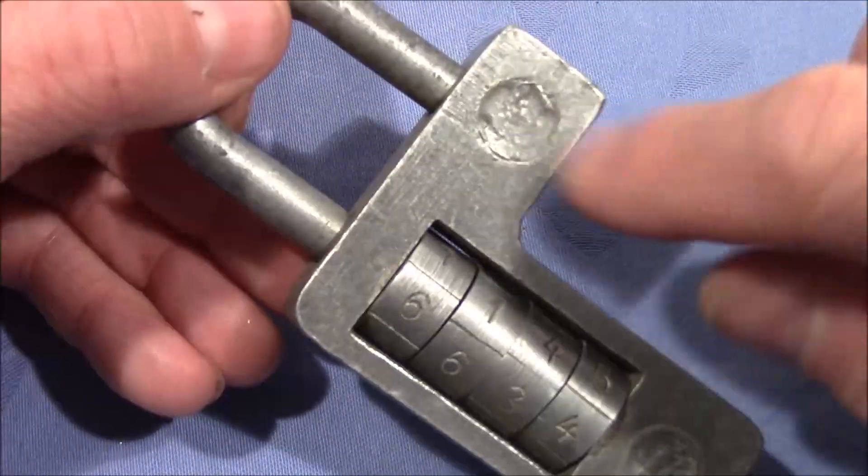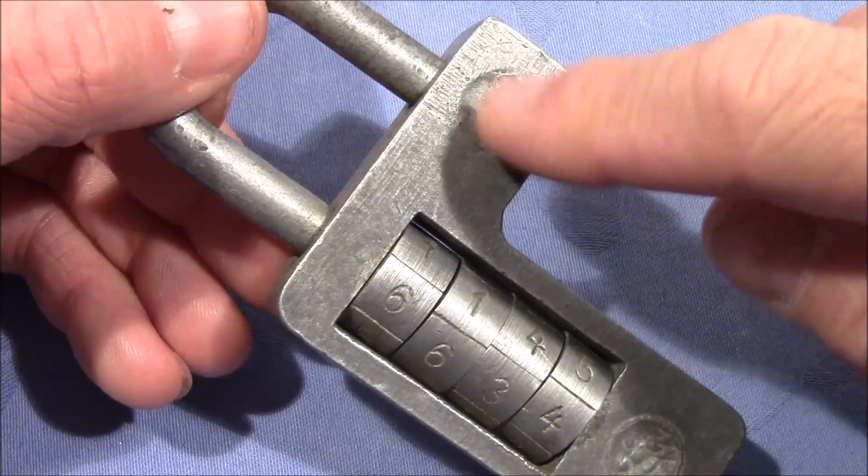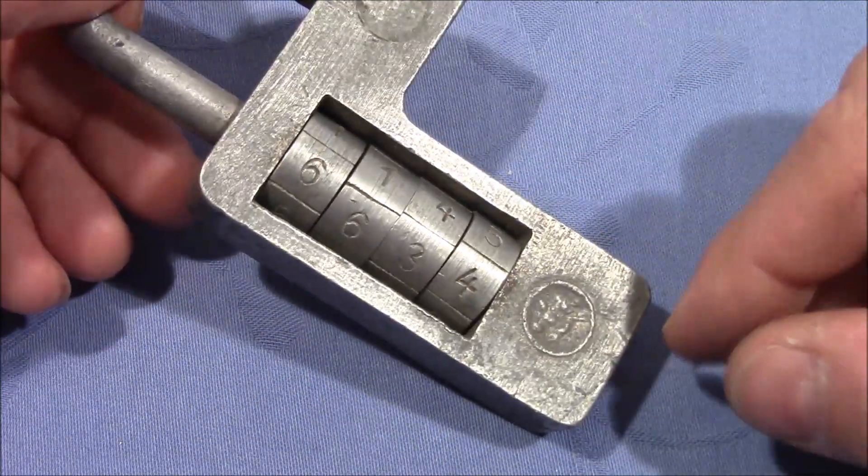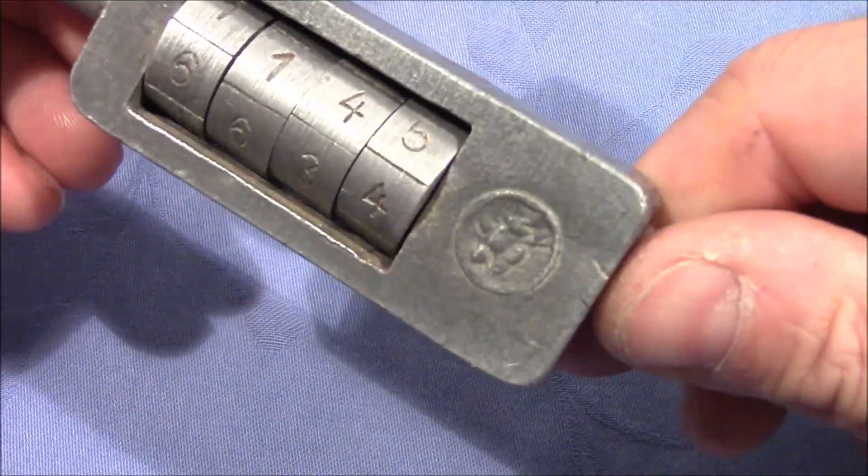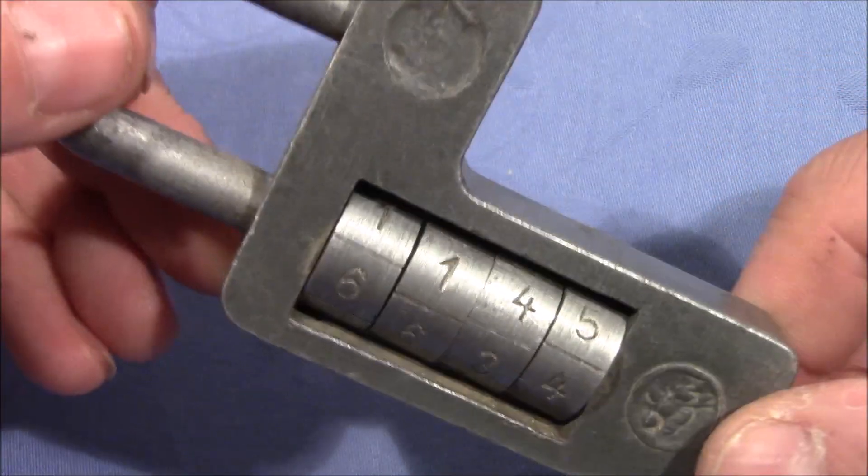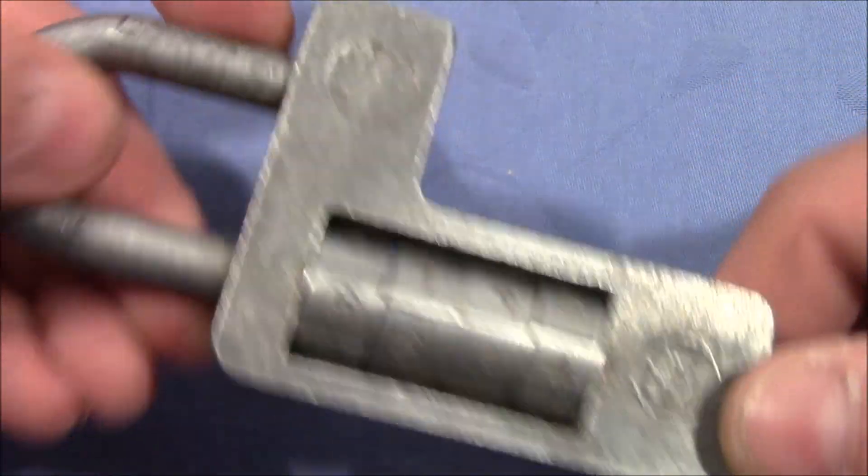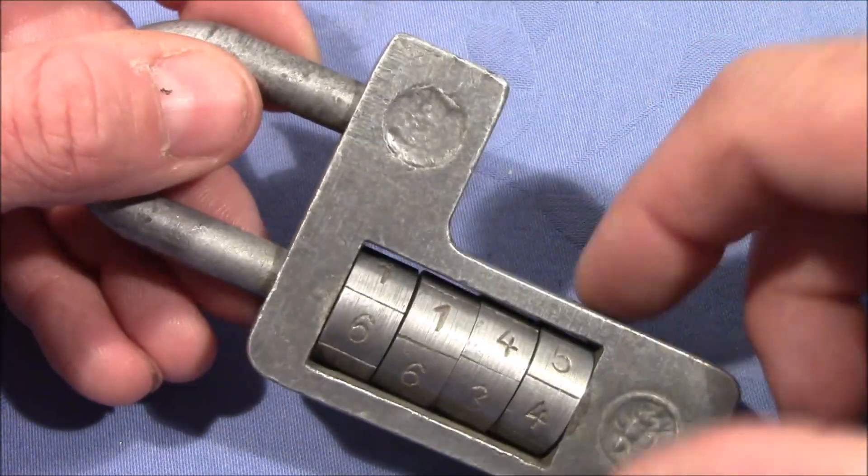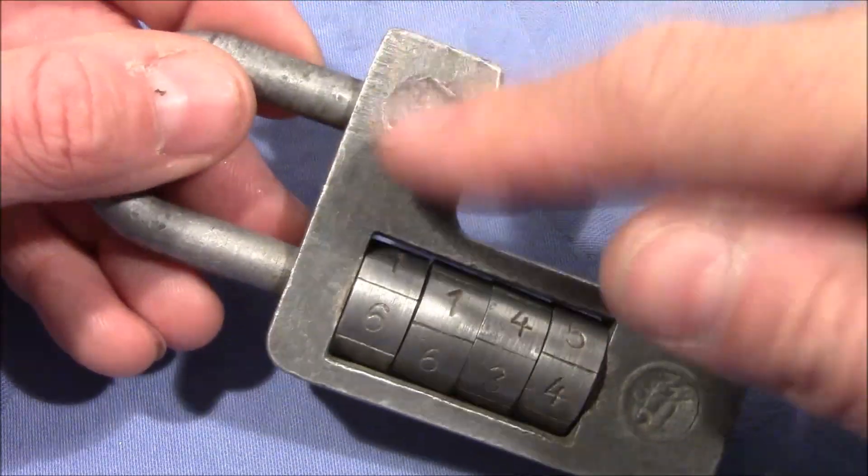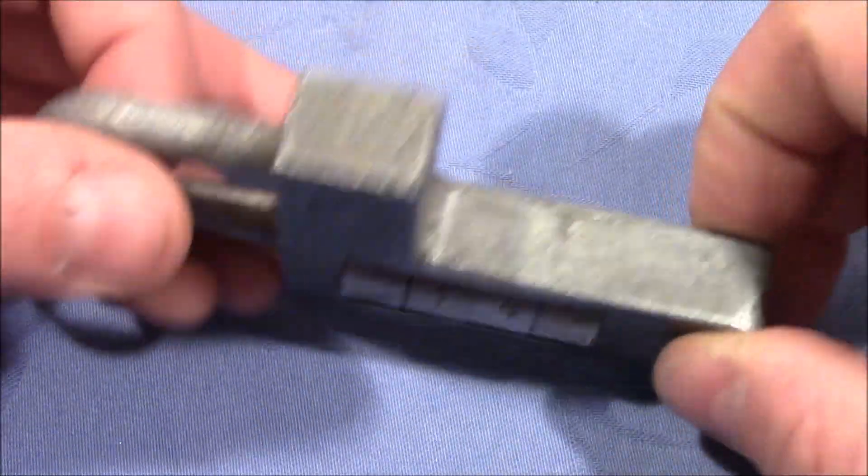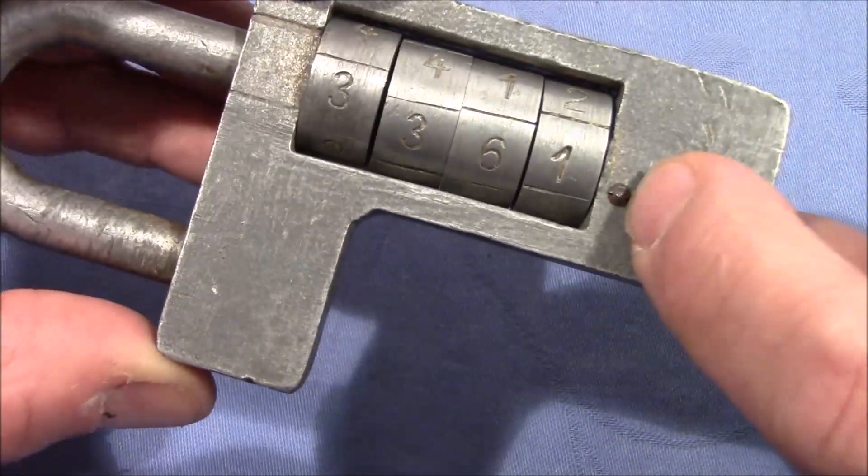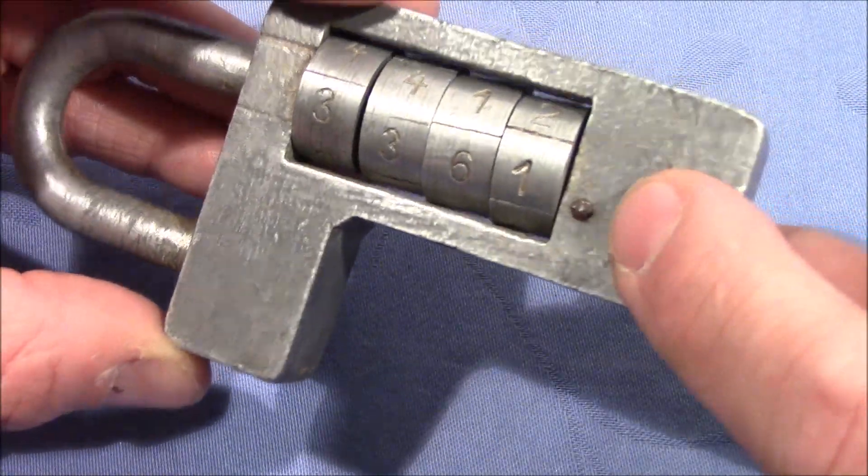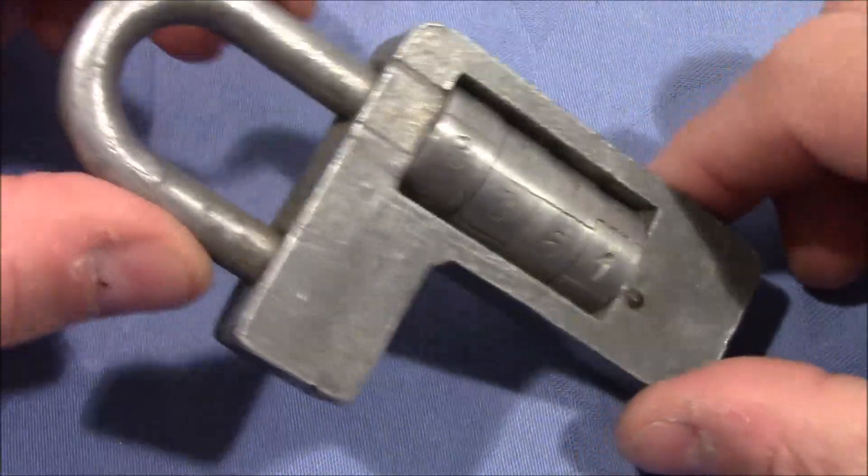We can see some marks here and there but no information about anything. I think these are just construction holes that were sealed afterwards. I don't know. And there is a pin here, but yeah, other than that it's a very strange looking combination padlock.